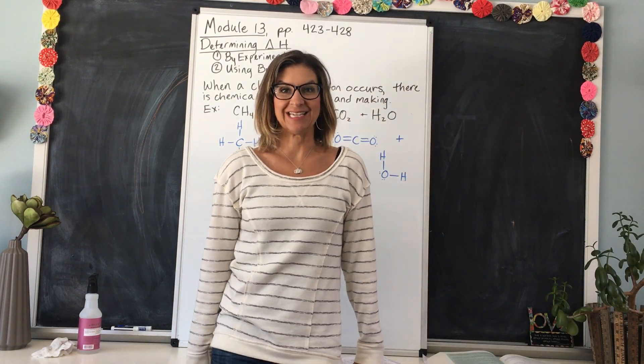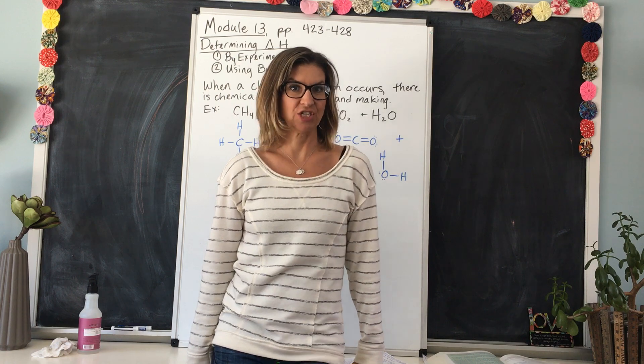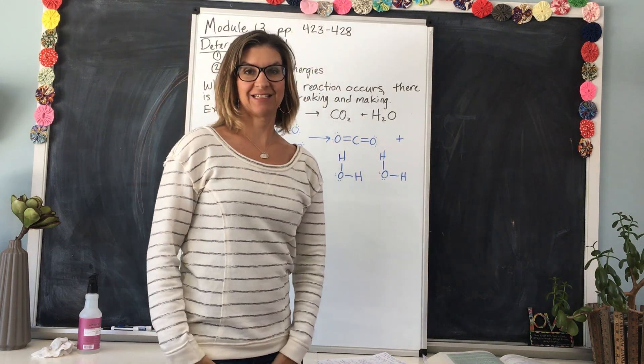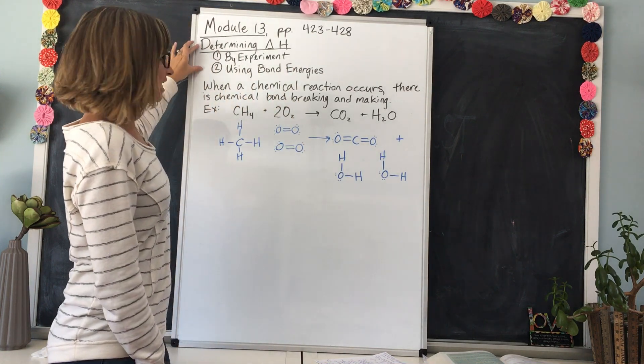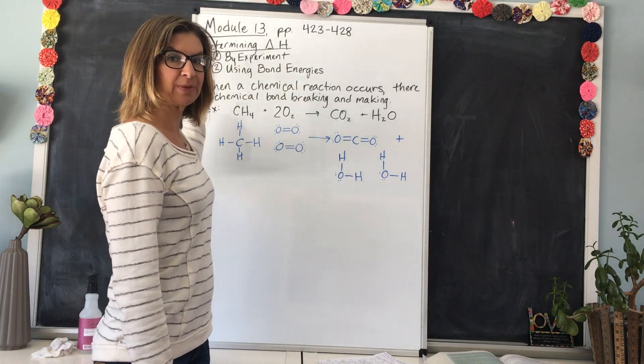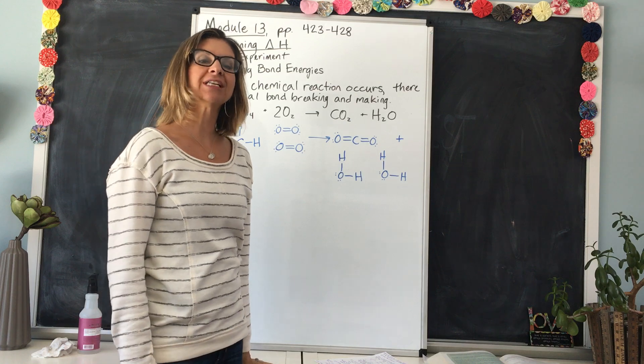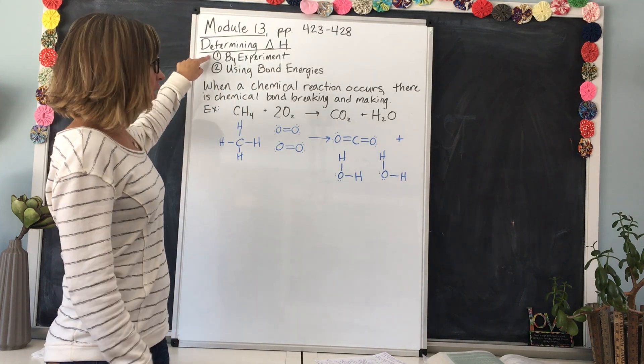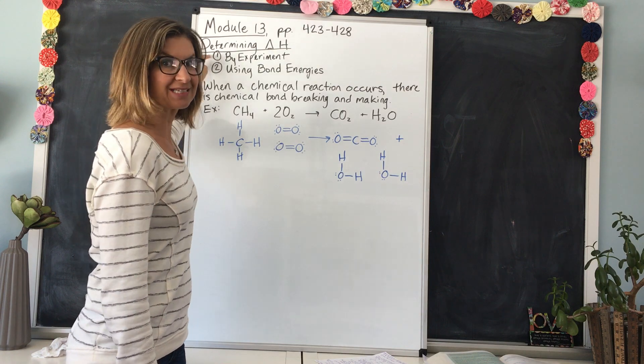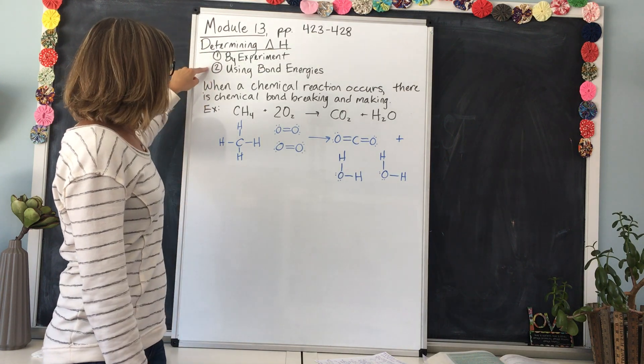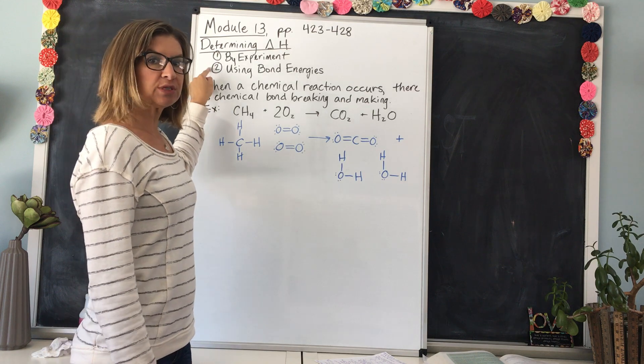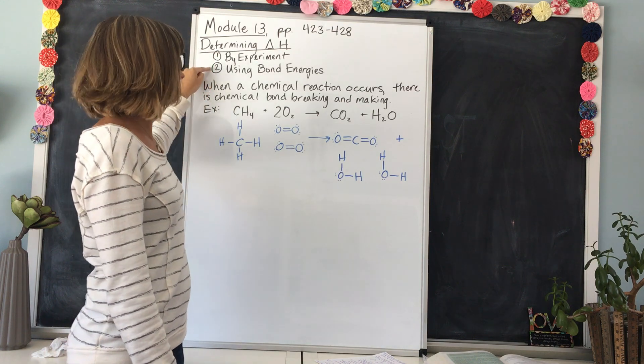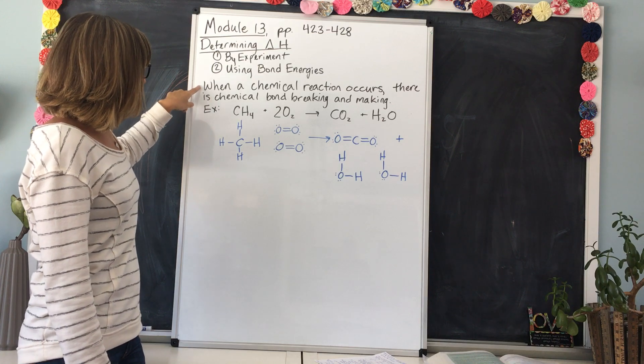Welcome back to module 13. Today we are up to pages 423 to 428. We left last time talking about how to determine delta H, the change in enthalpy in a reaction, and two of those ways were one by experiment, which of course takes a lot of time and resources, or secondly you can use bond energies, which we're going to learn about today.